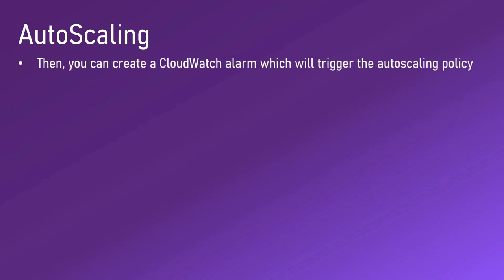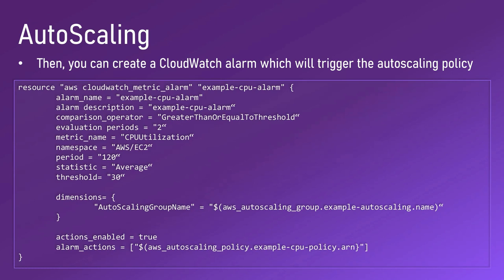Then you create a CloudWatch alarm which will trigger the auto scaling policy - defining when you want to trigger the plus one. Here we have 'example-cpu-alarm'. This is going to compare CPU utilization using the metric name 'CPUUtilization'. We compare greater than or equal to the threshold over two evaluation periods - taking the average of two periods and comparing against the threshold. The namespace is 'AWS/EC2', the threshold is 30 percent, and if the average CPU utilization is higher than 30 percent for a period of 120 seconds over two evaluation periods, the alarm will go off and auto scaling will happen.